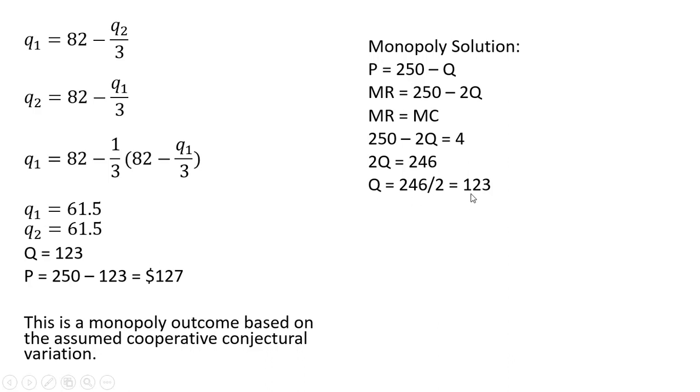Both firms split the output. They're each producing 61.5, with a market price here of $127. That's it. I hope you found this video helpful. Thank you.